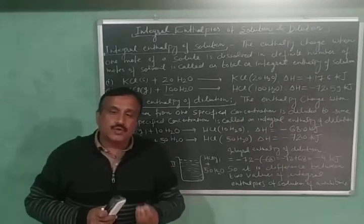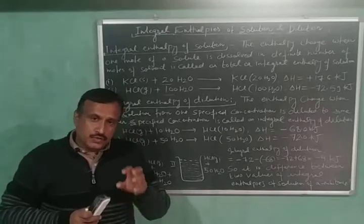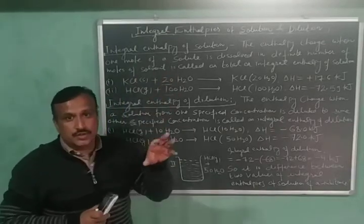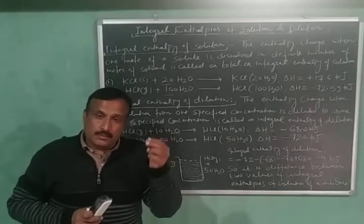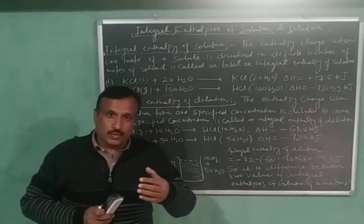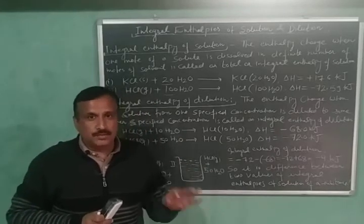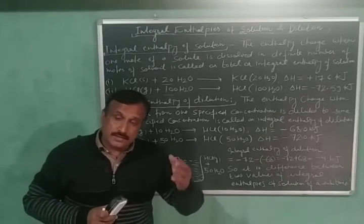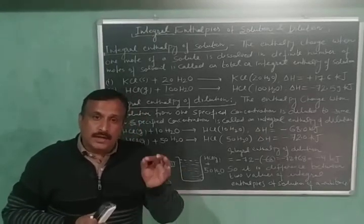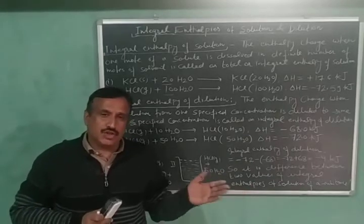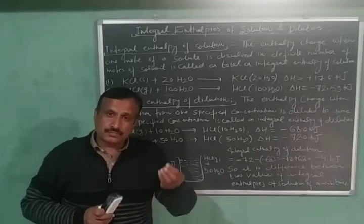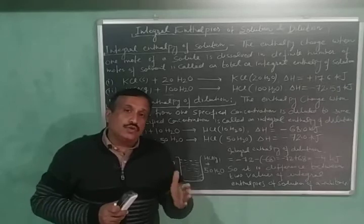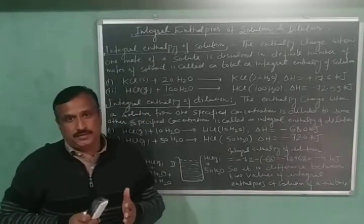Now let us discuss the enthalpy of solution at infinite dilution. When the integral enthalpy of solution is reported, the number of moles of solvent required to dissolve one mole of solute must be indicated. If no such indication is made, it is assumed that one mole of the solute has been dissolved in an infinitely large amount of solvent, and the enthalpy change in that case is called the enthalpy of solution at infinite dilution.